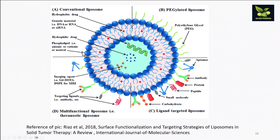This picture is taken from Riaz et al. 2018. On the left-hand side you can see a conventional liposome containing hydrophobic and hydrophilic drugs with phospholipids. The second one shows pegylated liposomes where PEG is incorporated. The third shows liposomes with various ligands attached — carbohydrates, small molecules, peptides, proteins, antibodies, and aptamers — for targeted delivery. The fourth is a multifunctional liposome incorporating imaging agents, targeted ligands like antibodies, and even genetic material.